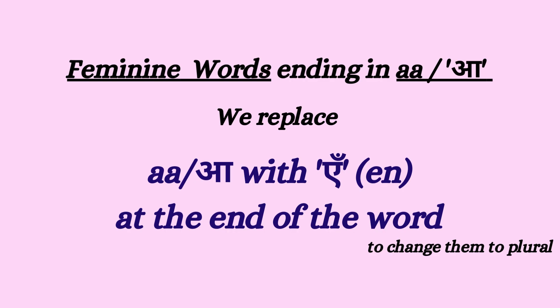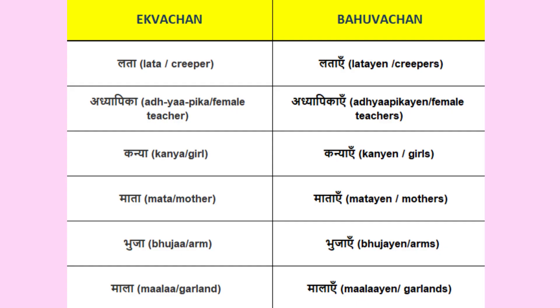Rule number 2: All feminine words which end in -aa change to plural by adding -yein at the end. For example: lata → latayein, adhyapika → adhyapikayein, kanya → kanyayein, mata → matayein, bhuja → bhujayein, mala → malayein.